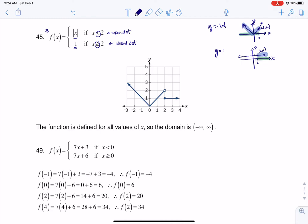So you can see me piecing these together. Here's the ordered pair 2, 2 with the open dot. Here's the ordered pair 2, 1 with the closed dot. And that's my piecewise function.